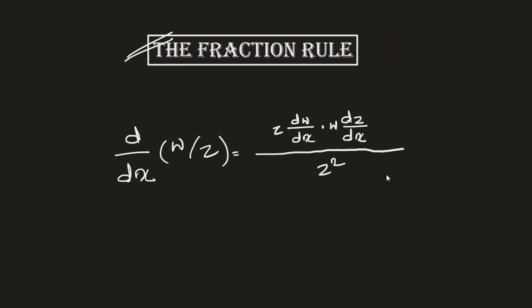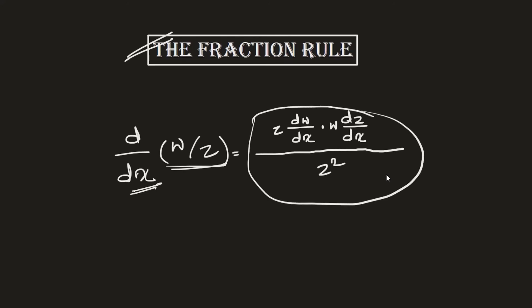The fraction rule: if w/z is a function of x, the derivative is calculated as follows. We have z² in the denominator and on the numerator we apply the product rule to w·z — keeping the denominator as constant at z². On the top, where we have w·z, we apply the product rule discussed earlier to get the final result.